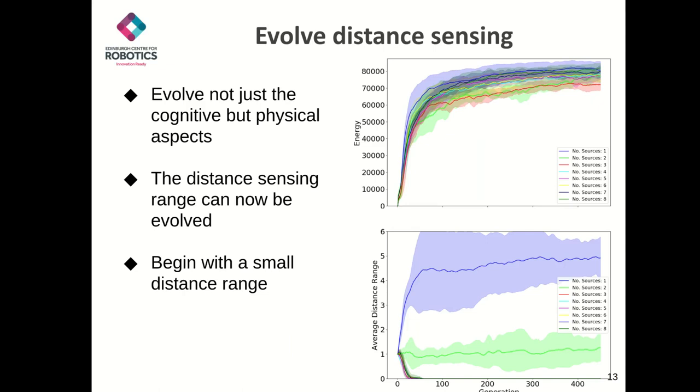To test this idea, we allowed the swarm to not only evolve their controller, but also their physical characteristics as well, specifically the range of their distance sensors. We began with a distance sensing range of only one unit, as we could then see if the swarms preferred to constantly increase their distance sensing range or not. As a quick reminder, the radius of the environment is 2.5 units, and it should be noted that signaling was enabled for all these simulations.